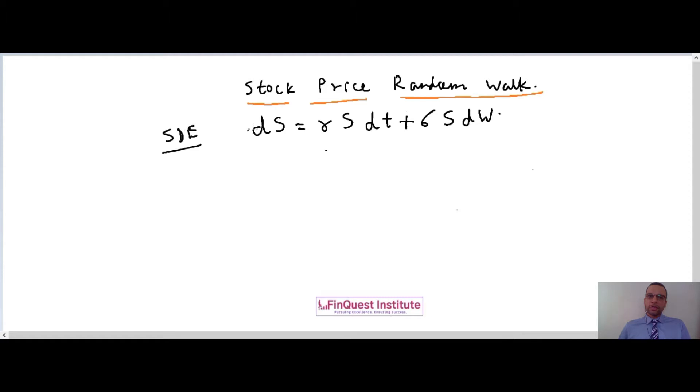So let's split this equation into two parts. The part which is highlighted in blue is what we call as the deterministic portion, and the part which is highlighted in red is what we call as the stochastic or the random portion.